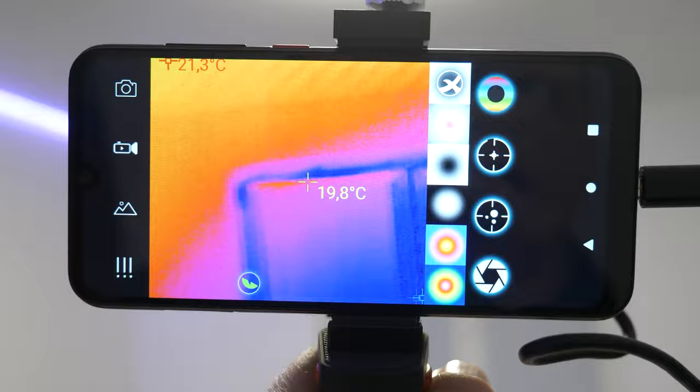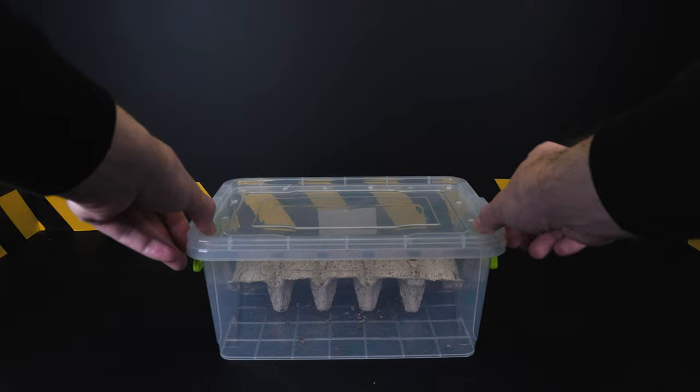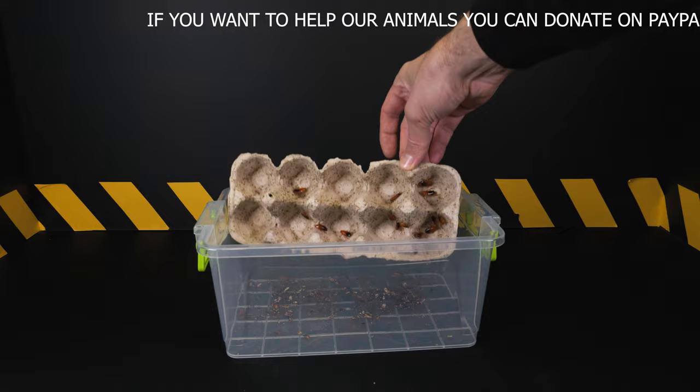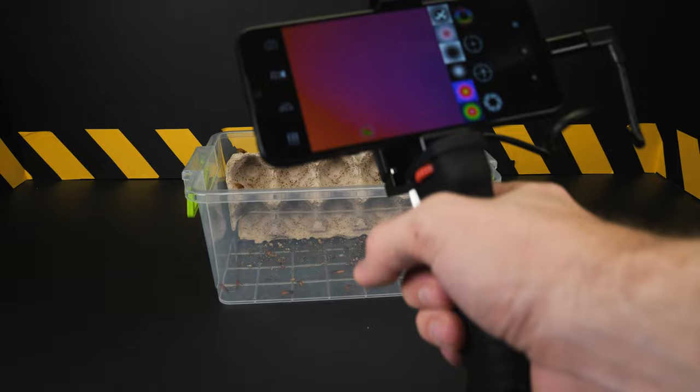The processor of the thermal imager receives a signal from each pixel and, based on a mathematical calculation, creates a color map of the apparent temperature of the object. Each temperature value is assigned a color. The resulting color matrix is transferred to the memory and displayed on the screen of the thermal imager as a thermal image of the object.